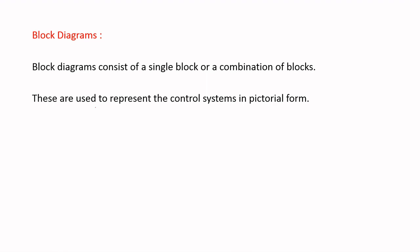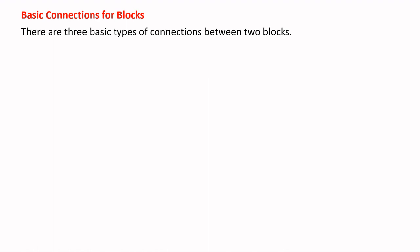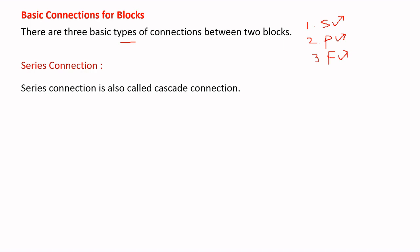Block diagrams are used to represent control systems in the factorial form, consisting of a single block or combination of blocks. In block diagram algebra we have three basic types of connections: the first is a series connection, the second is the parallel connection, and the third is the feedback connection. We are going to discuss these three types in detail — what is the equivalent transfer function for each type of connection.